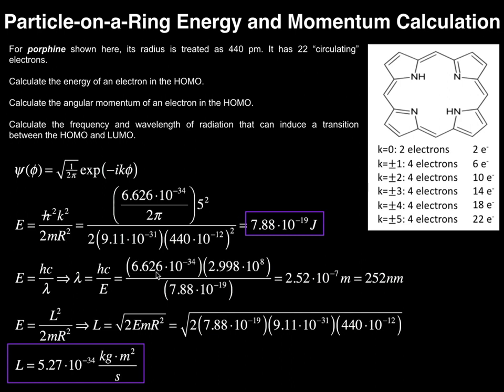In the calculation of energy using the eigenvalue derived from the Schrodinger equation, it doesn't matter if we consider positive or negative K, because we're squaring it in this calculation. What is our energy eigenvalue for a particle on a ring? The energy equals h-bar squared times K squared divided by 2mr squared. Now we have all the information to calculate the energy.